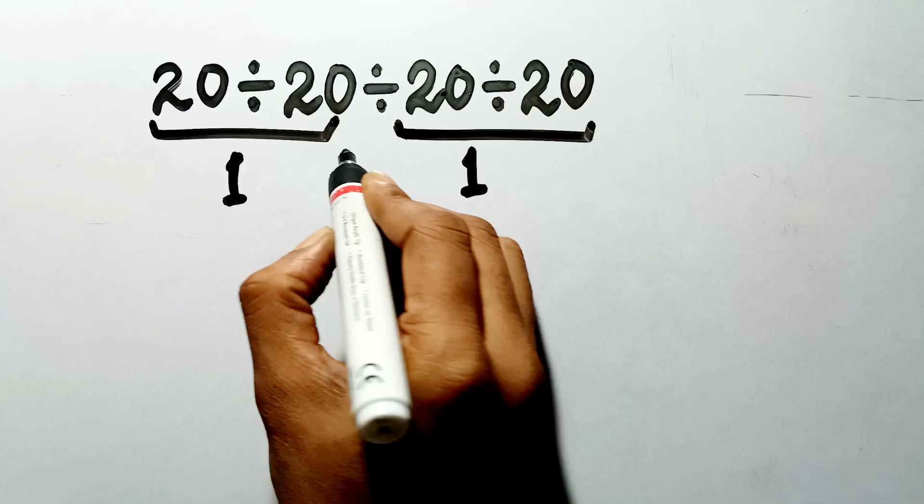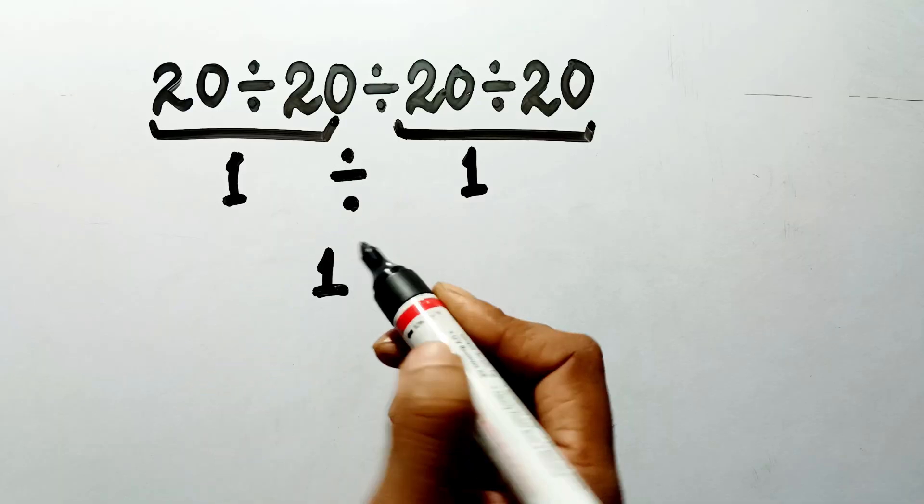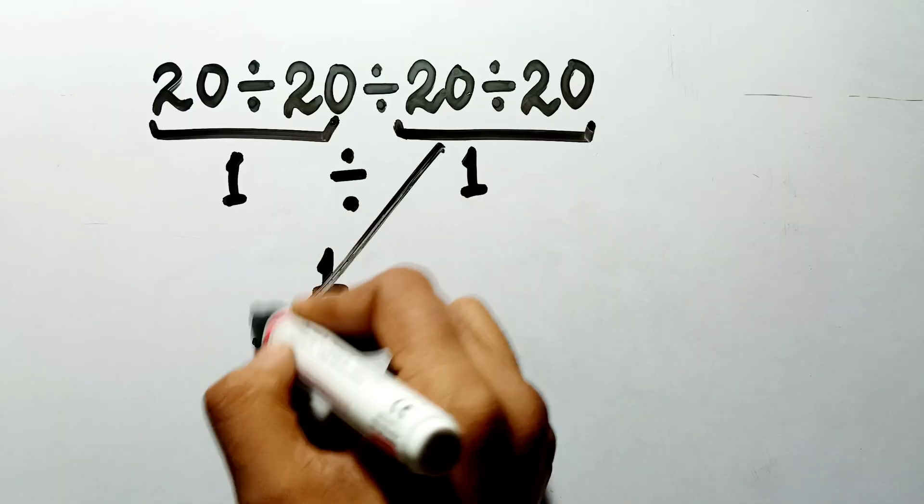So naturally, 1 divided by 1 gives us 1. But this answer is not correct,